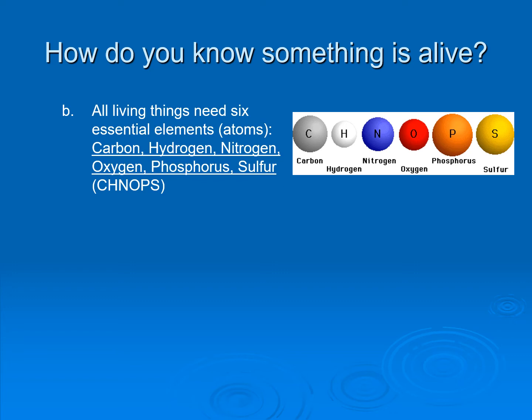All living things need to have six essential elements: carbon, hydrogen, nitrogen, oxygen, phosphorus, and sulfur — or CHNOPS, however you want to remember it. You need to know that carbon, hydrogen, nitrogen, oxygen, phosphorus, and sulfur are essential elements for life. There are plenty of other elements necessary for humans to live, but for all living things, they need those six elements.